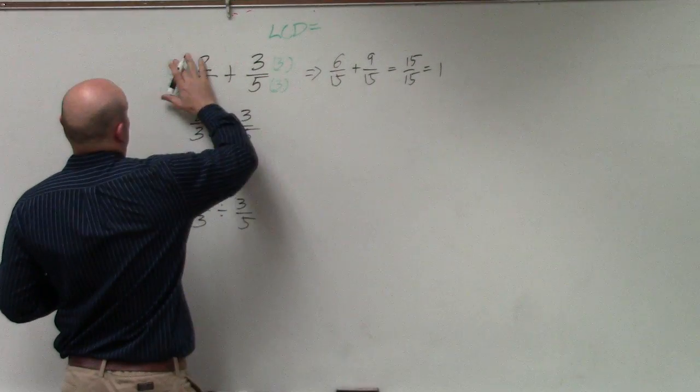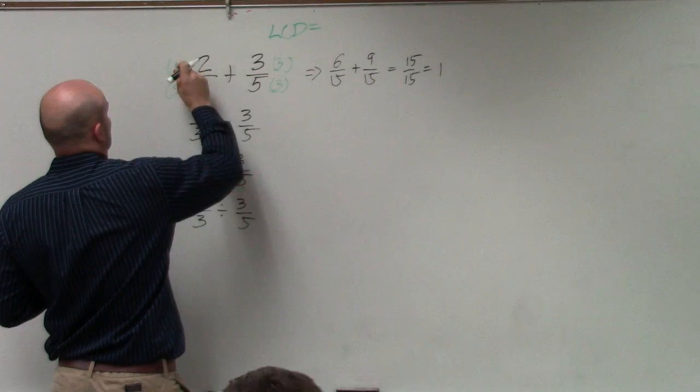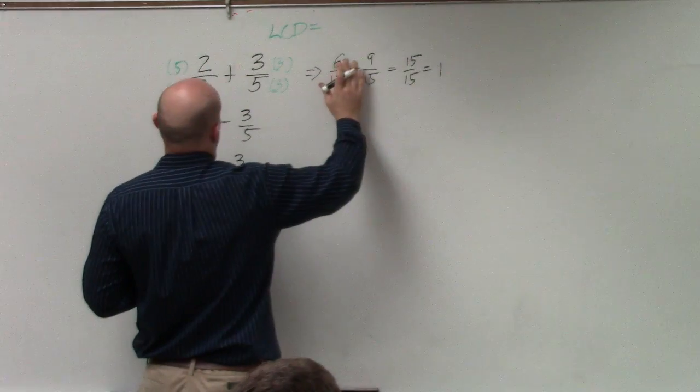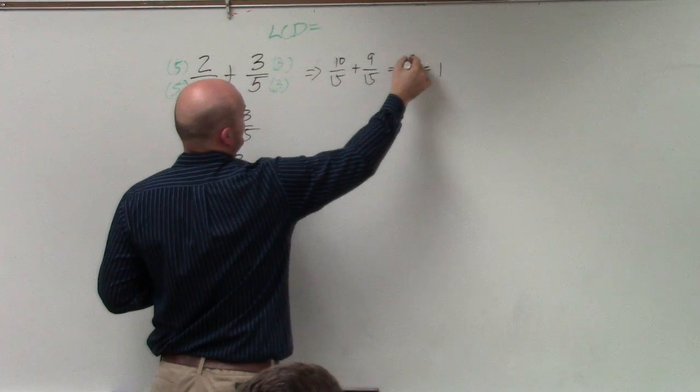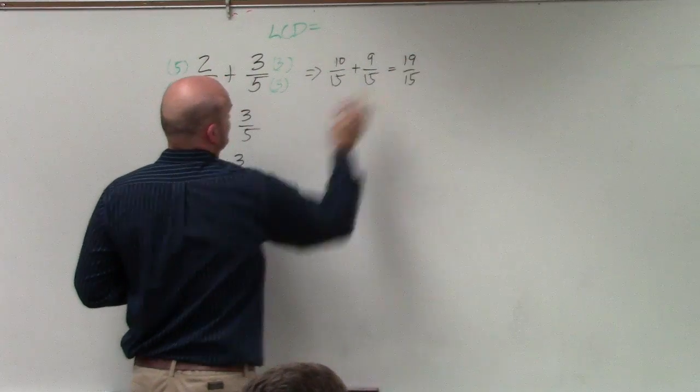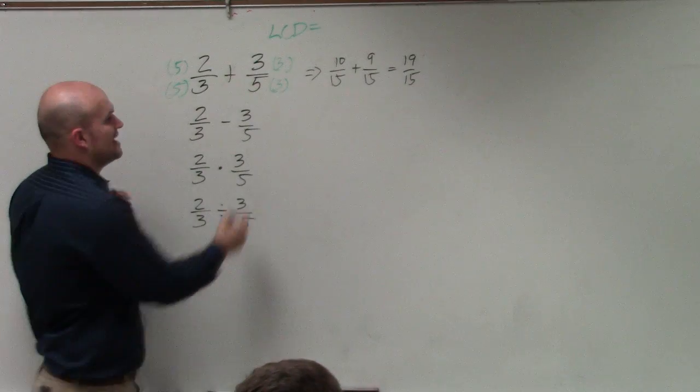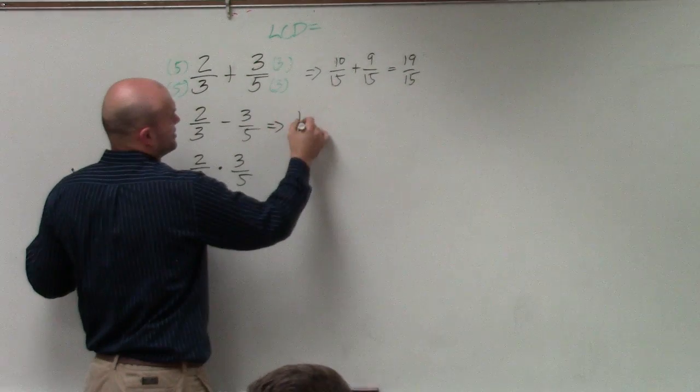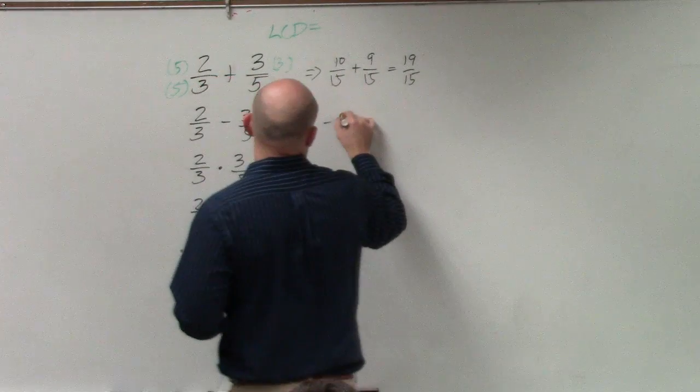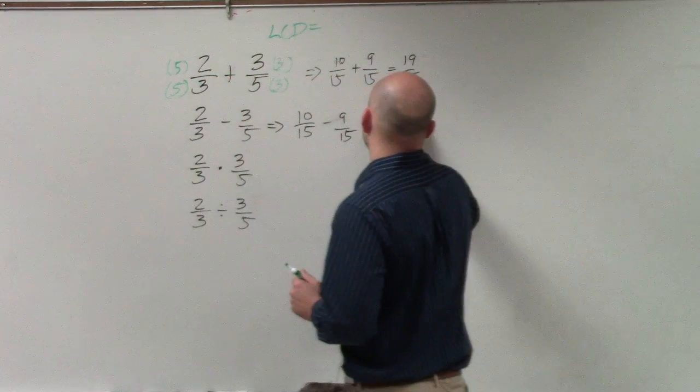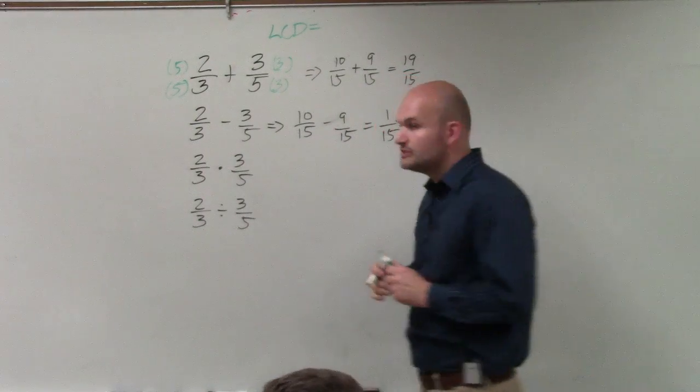That should be a 5. You are very correct. Thank you very much. So therefore that becomes 10 and then that becomes 19 which you cannot reduce. Okay? In this example we'll get the exact same except we're just going to be subtracting which gives you 1 over 15.